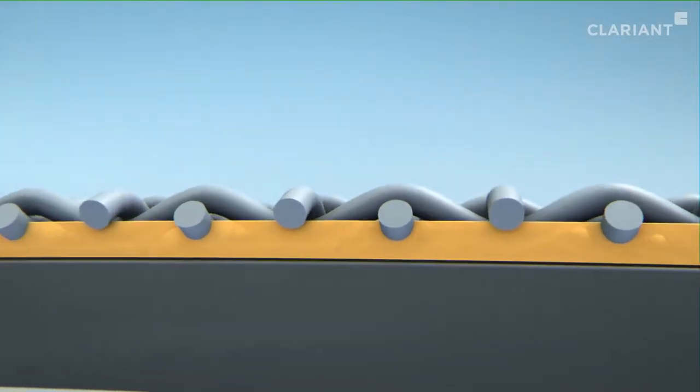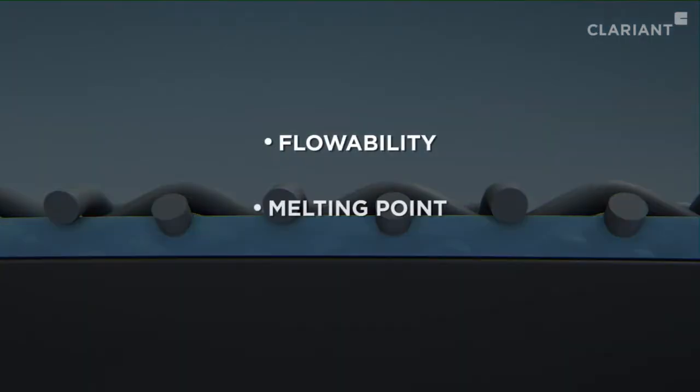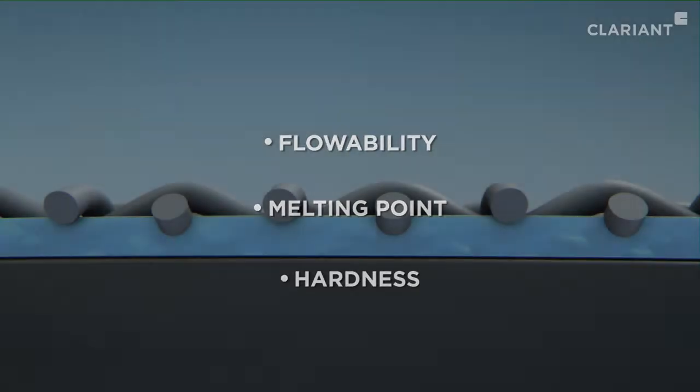One remedy would be to use an adhesive based on the same plastics as the textiles. So far, however, these hot melt adhesives have proved unsatisfactory regarding the decisive properties of flowability, melting point, and hardness. The reason for this is the conventional manufacturing process.